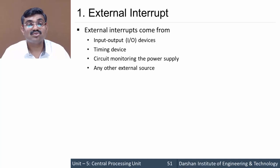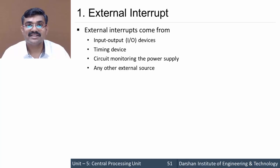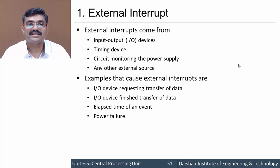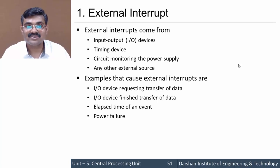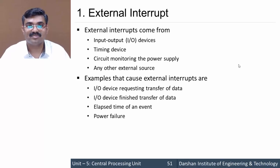External interrupts have sources such as I/O devices, timing devices, control circuits that monitor power supply, and other external sources. Examples include: an I/O device requesting a data transfer (e.g., keyboard input to the processor), an I/O device finishing a data transfer, elapsed time for an event, and power failure. These are all examples of external interrupts.